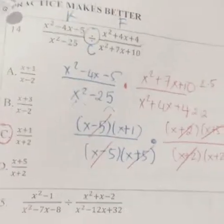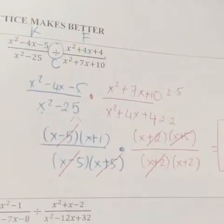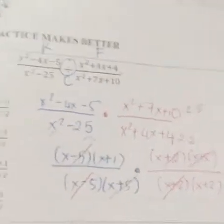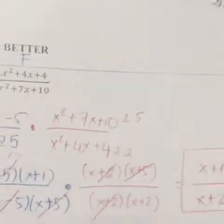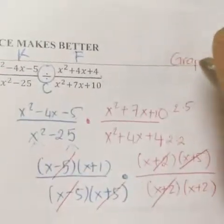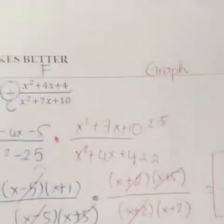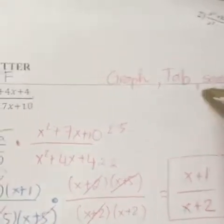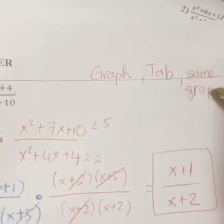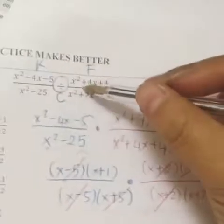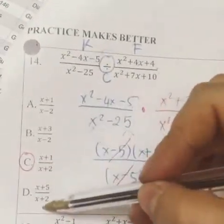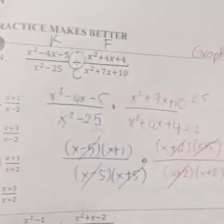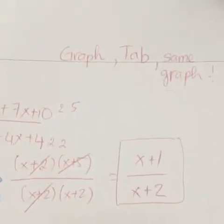That's how you do it by hand: factor out, cancel, and record what's left over. There's also another way — if you have no idea how to factor or you're struggling, you can graph the original expression, press tab to open another window, then graph each answer choice and see which one has the same graph as your original. I also have office hours every day after school from 4:20 to 5:20. See you there — bye!